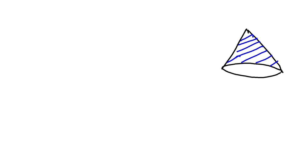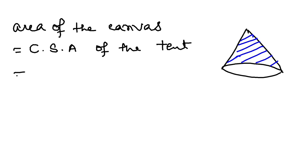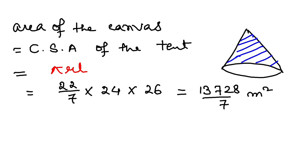Area of the canvas is nothing but CSA of the cone or CSA of the tent in this case. CSA of the tent is πrL. If I substitute the values: π is 22 by 7, radius is 24, and slant height L that we just calculated is 26. If you simplify all these, you will get 13728 by 7 meter square. This is the area of the canvas.